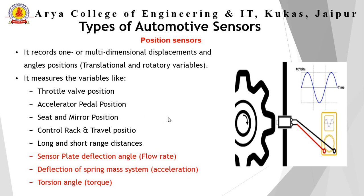Indirectly measured variables include sensor plate deflection, which defines the flow rate of a fluid or air-fuel ratio; deflection of a spring-mass system, which defines acceleration; and torsional angle, which defines the torque of the crankshaft developed by the engine. So position sensors measure both direct and indirect variables.